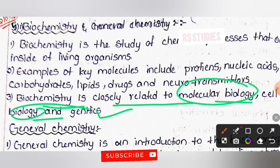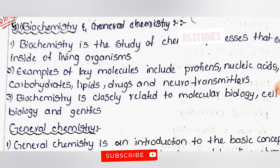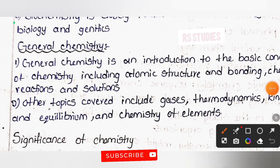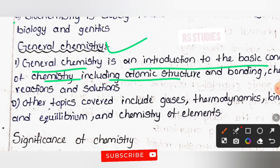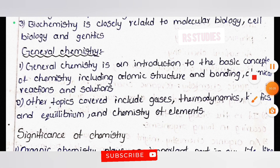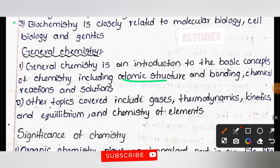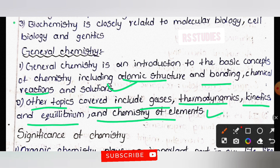Next and last is general chemistry. General chemistry is an introduction to the basic concepts of chemistry, including atomic structure and bonding, types of bonds, chemical reactions, types of reactions, and solutions. Other topics include gases, thermodynamics, kinetics, equilibrium, and the chemistry of elements.